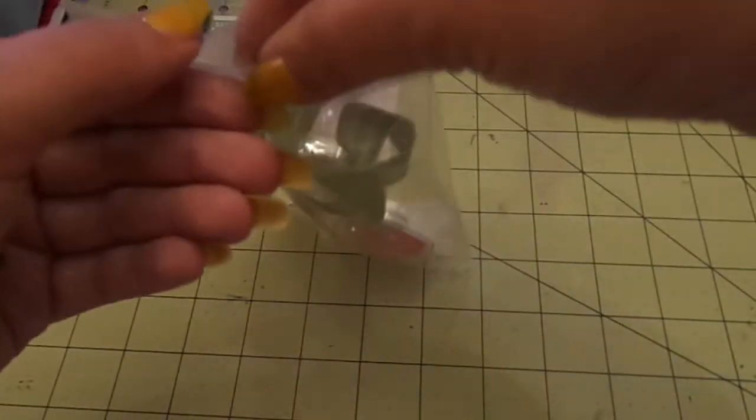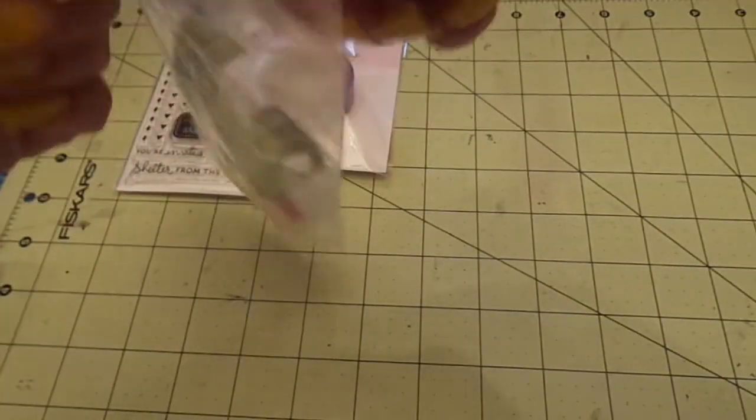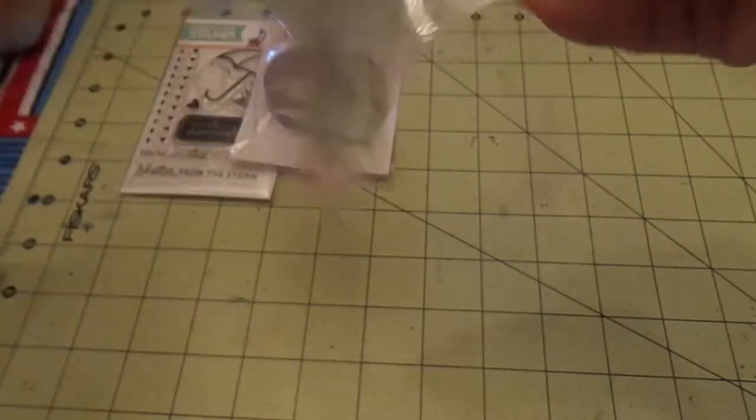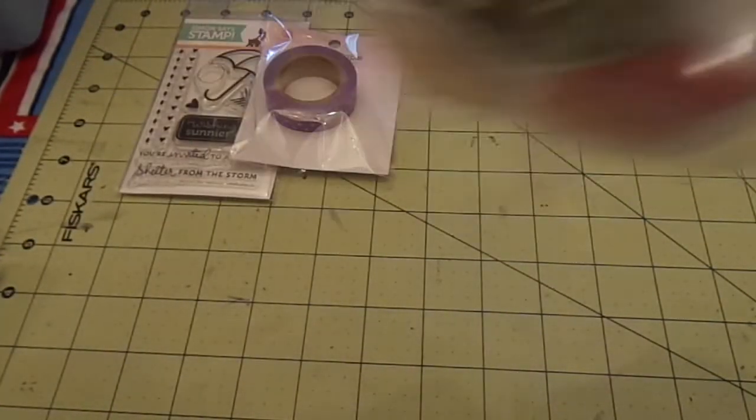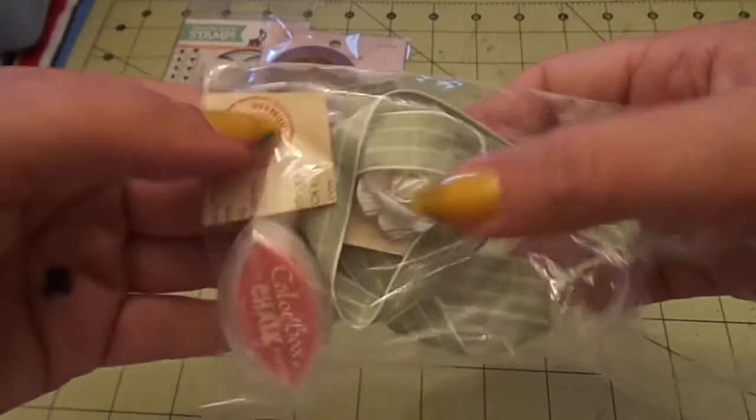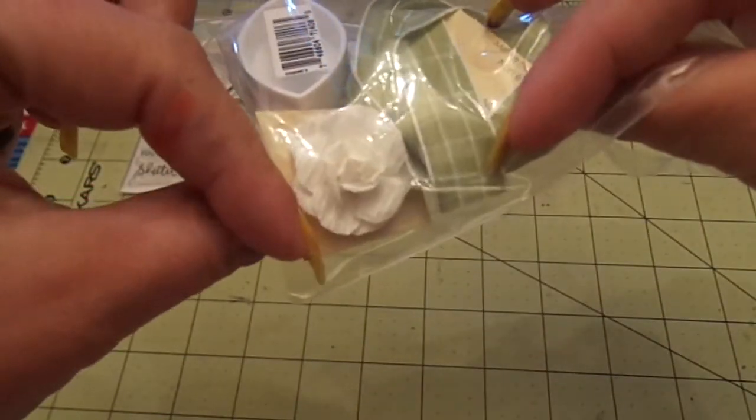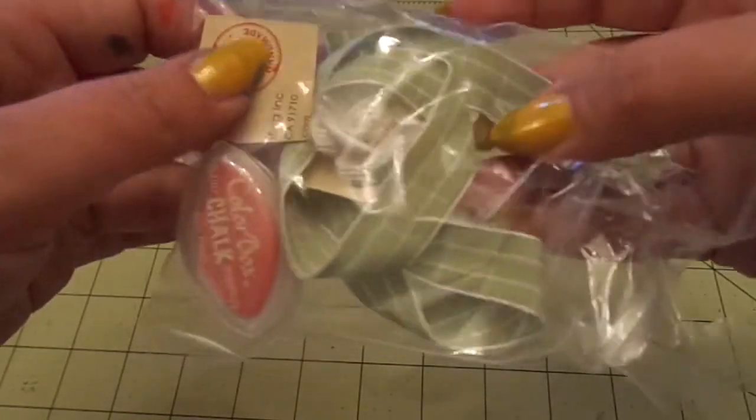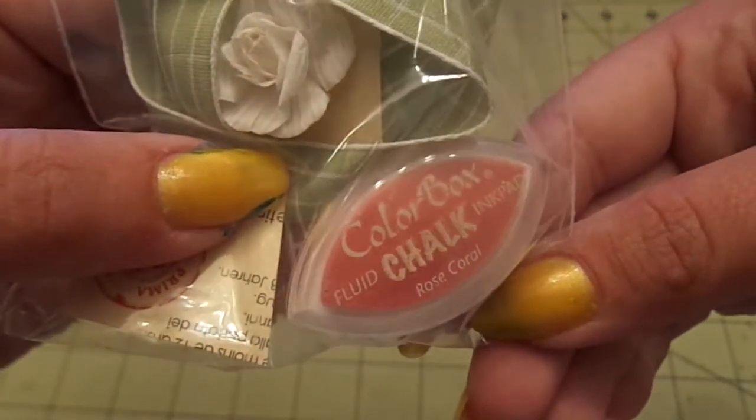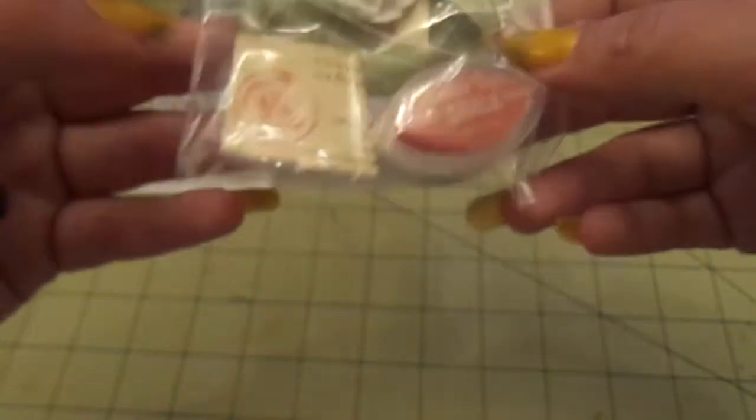You get this little bag here which has some... it doesn't want to open, I'll cut it open. So you get two white prima flowers, roses. You get this green ribbon. And then you get a color box chalk ink in rose coral. I don't have that color, so happy about that.